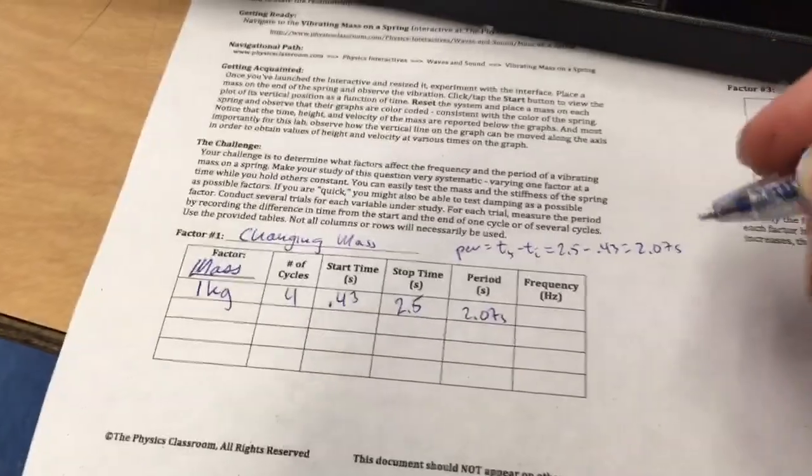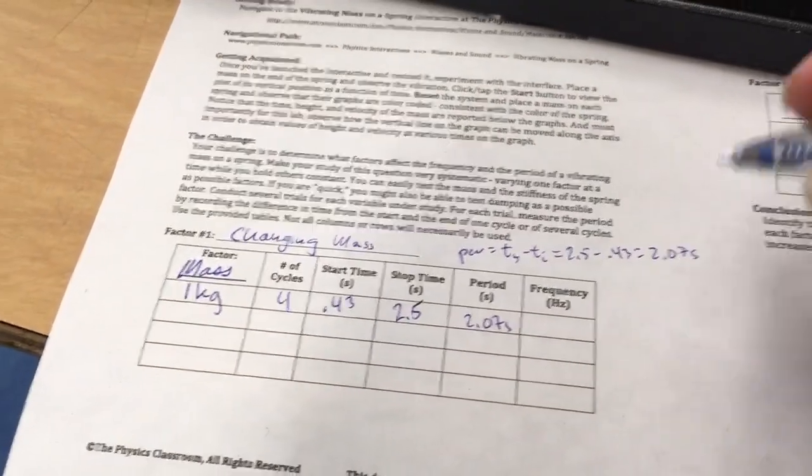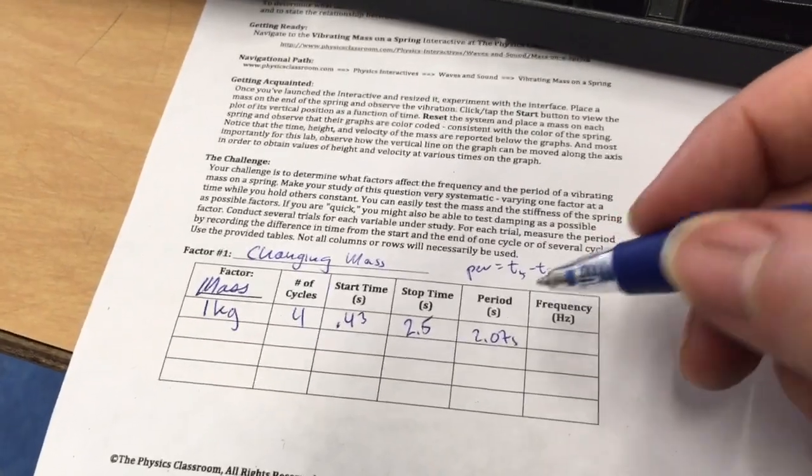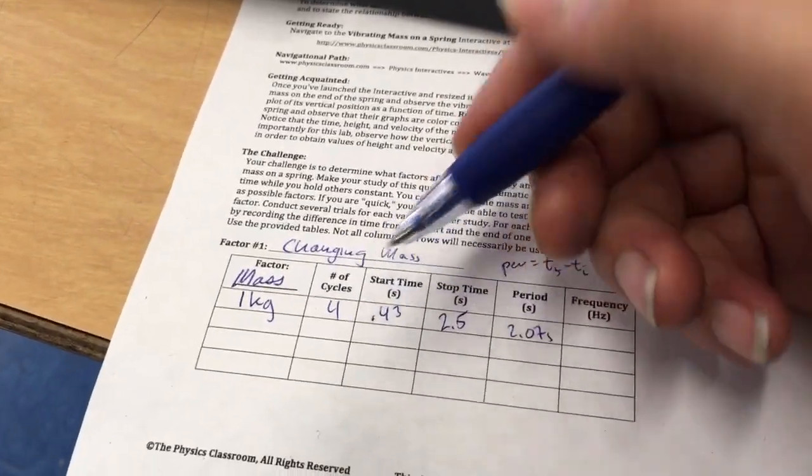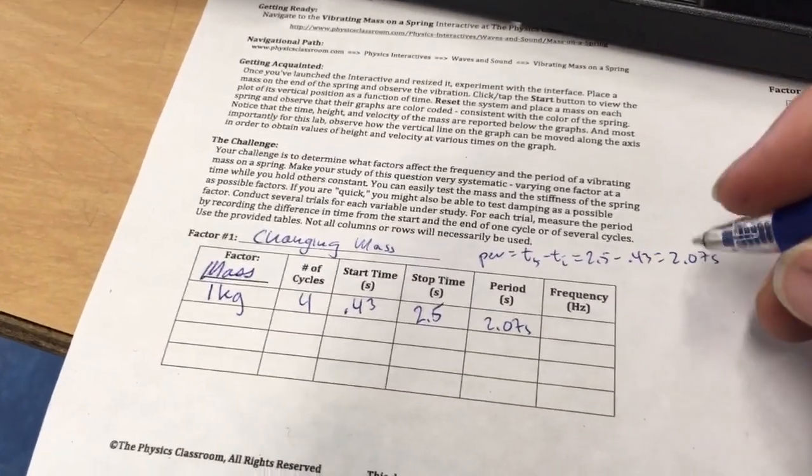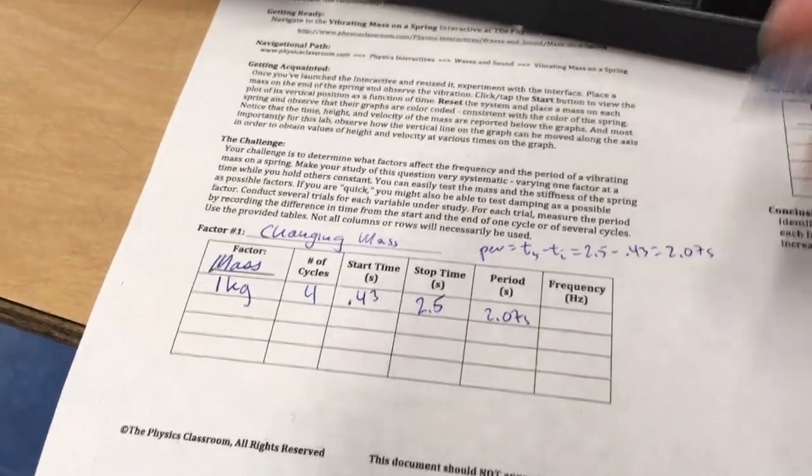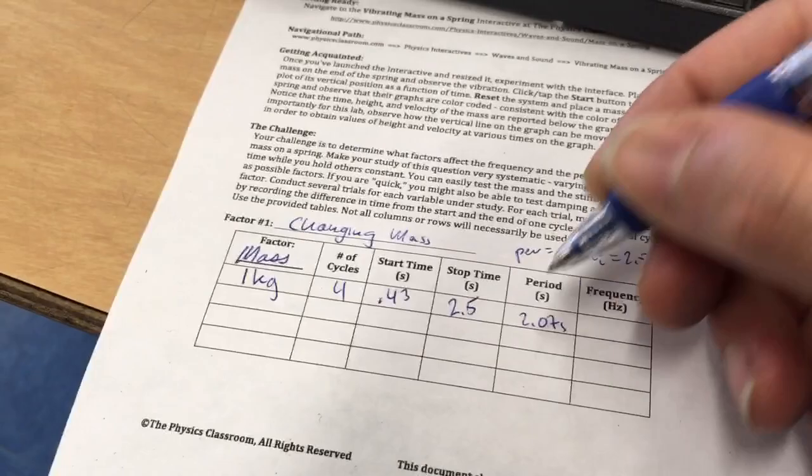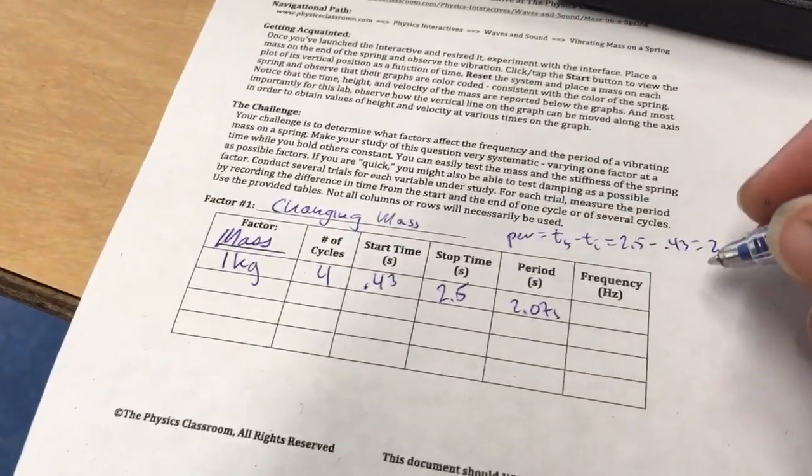And the frequency is going to be, like I said earlier, the inverse of the period. So if in 2.07 seconds, 4 waves goes by, then the frequency, or how many waves goes by, would be the reverse of that. Uh-oh. I made another mistake.